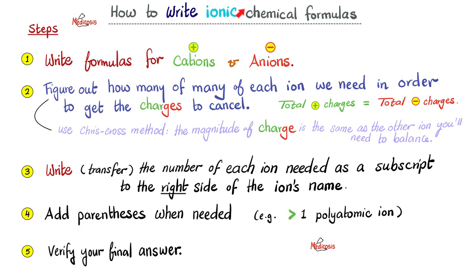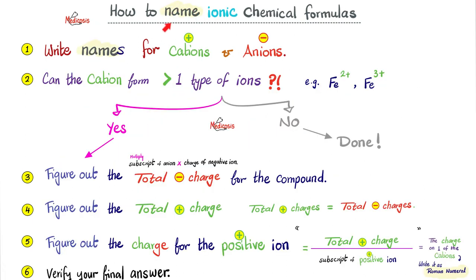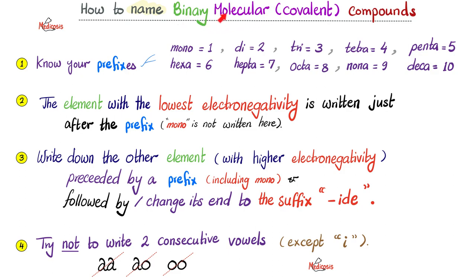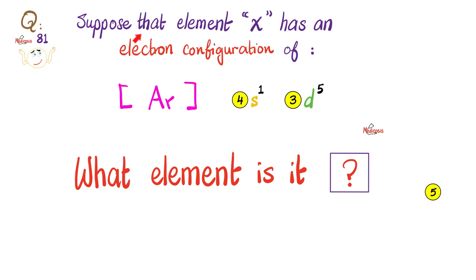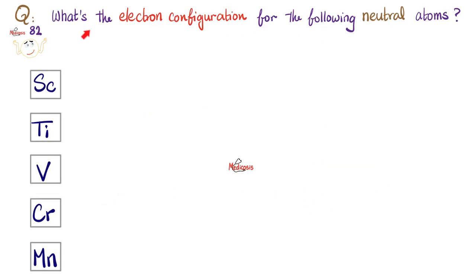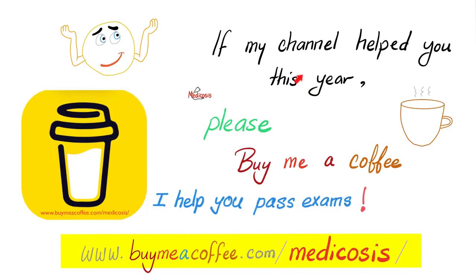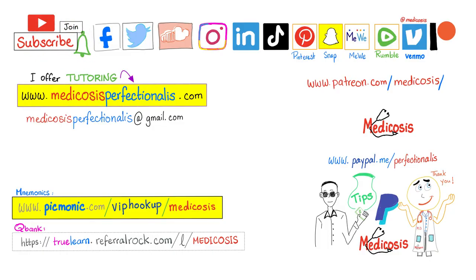In today's lecture we learned three skills: how to write ionic chemical formulas, how to name ionic compounds, and how to name binary molecular compounds. Quiz time: identify a mysterious element from its electron configuration, and write configurations for given neutral atoms — leave your answers in the comments. If my videos are helping you, please support by buying me a coffee at buymeacoffee.com/medicosis, smash like, subscribe, hit the bell, and visit my website for notes and courses. This is Medicosis Perfectionalis, where medicine makes perfect sense.